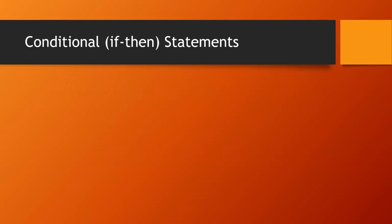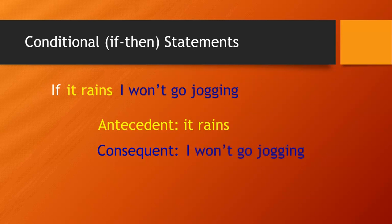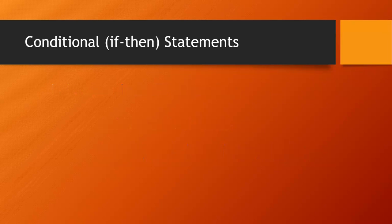Let's take our conditional statement and rewrite it ever so slightly: 'If it rains, I won't go jogging.' The antecedent is still the part of the statement right after the word 'if,' so the antecedent is still 'it rains.' The consequent may not be as obvious because we're missing the word 'then.' The word 'then' is implied — 'If it rains, I won't go jogging' means the same thing as 'If it rains, then I won't go jogging.' So the consequent is after the implied word 'then,' which is 'I won't go jogging.'